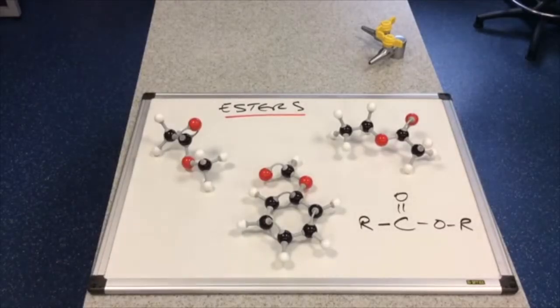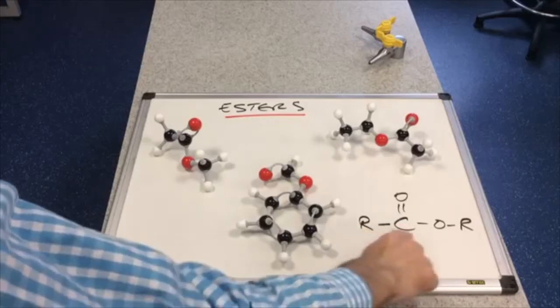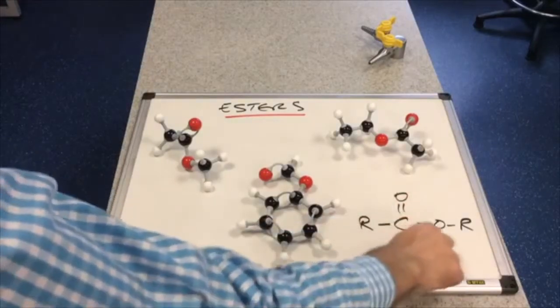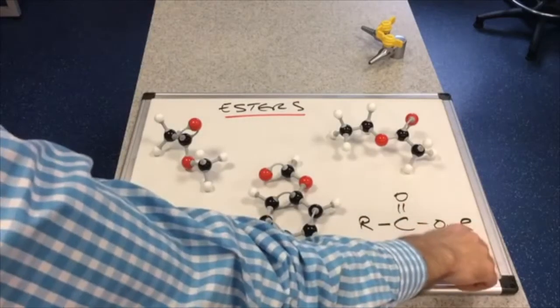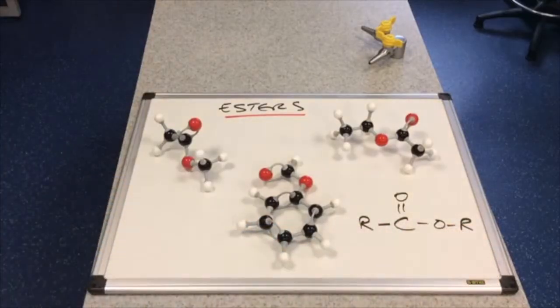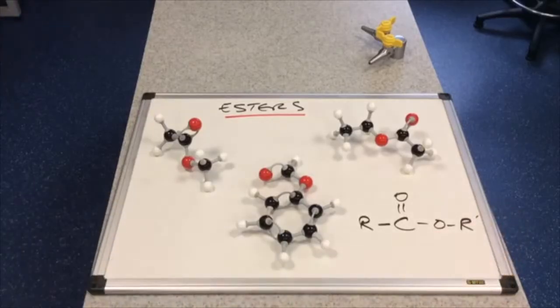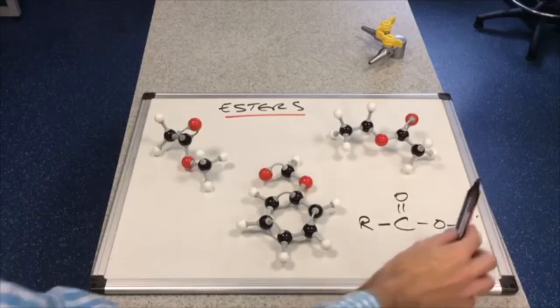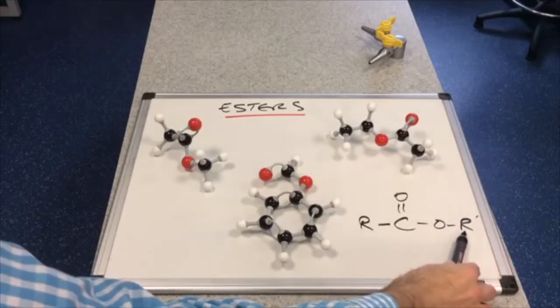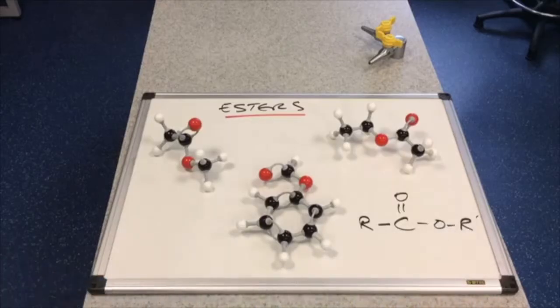So we'll start by looking at the functional group of an ester. We've got this R group and then a C double bond O, single bond O connected to another R group. Now these R groups can be the same or they can also be different, and this R group here could be a hydrogen. This R group can't be a hydrogen because if that was a hydrogen then you would just have a carboxylic acid.